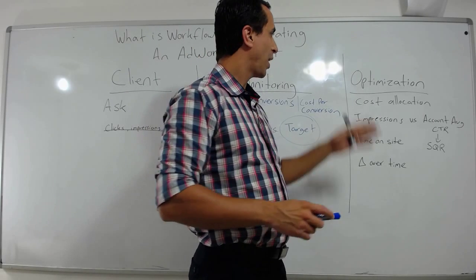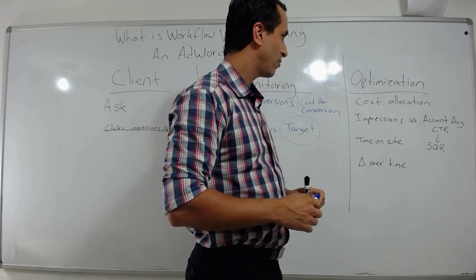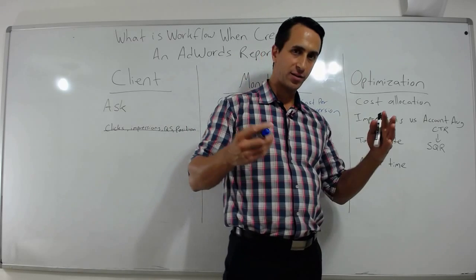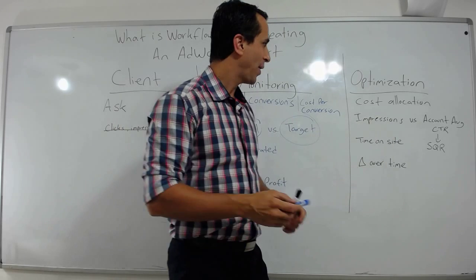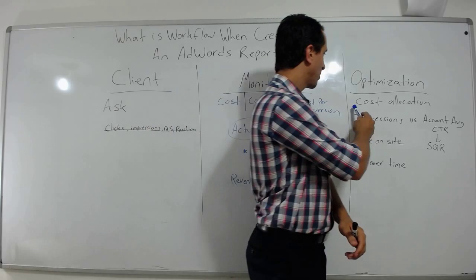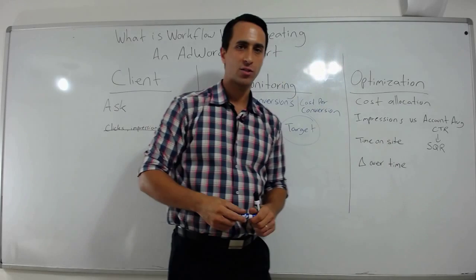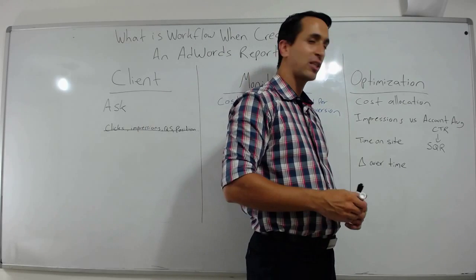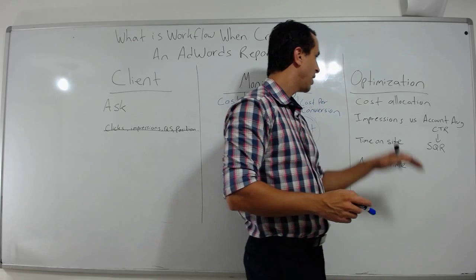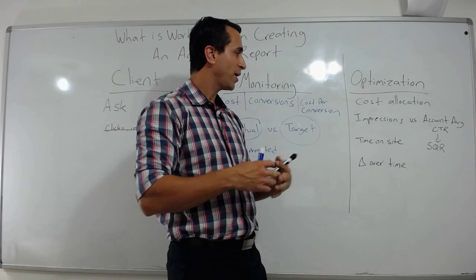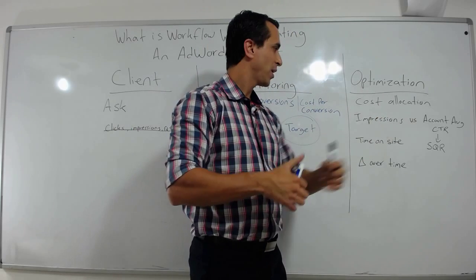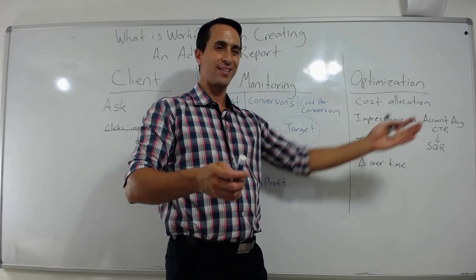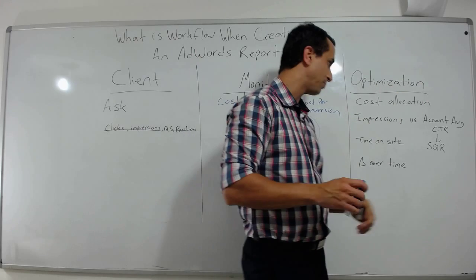Then there are reports for optimization. What we look at here is kind of the optimization process, and that is looking at cost allocation — where is the cost going? Your 80-20 rule: where are you putting most of the money, and is that the right place? If you can control your costs and cut the waste, you can always spend it later. But if you go over and waste the money, you can't take it back from Google.